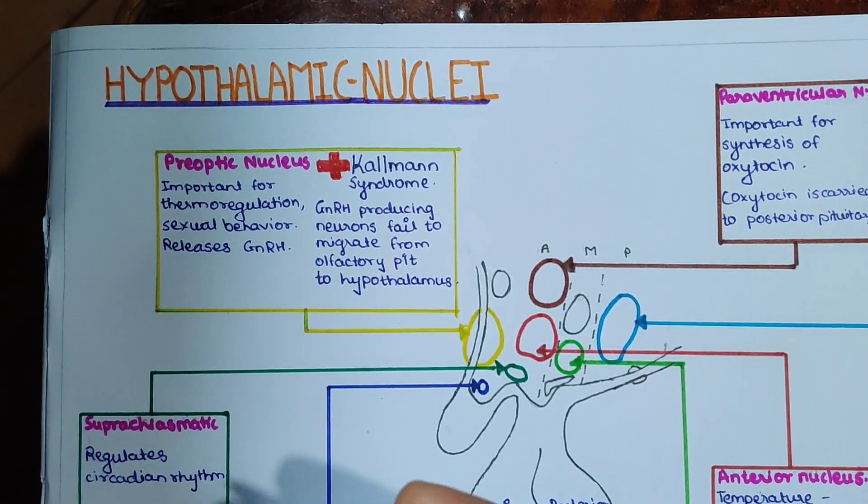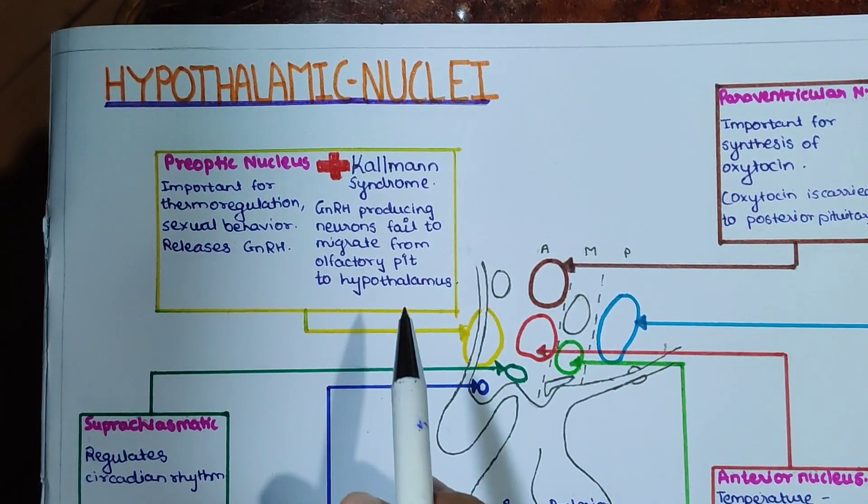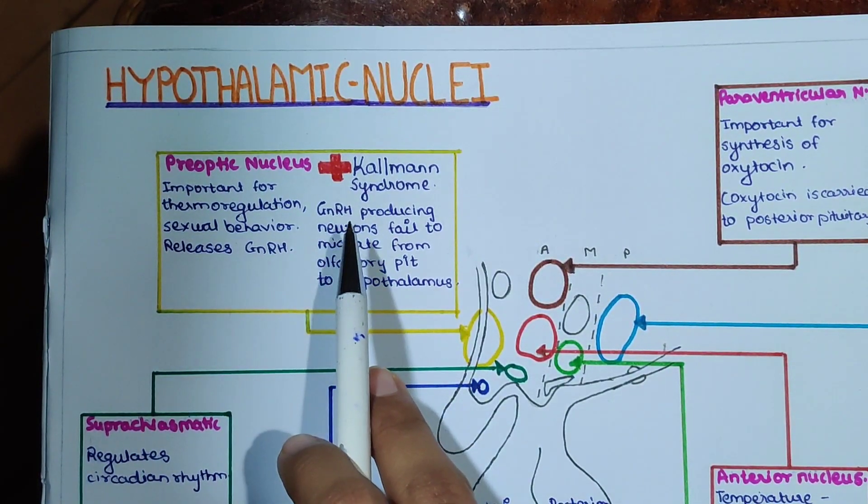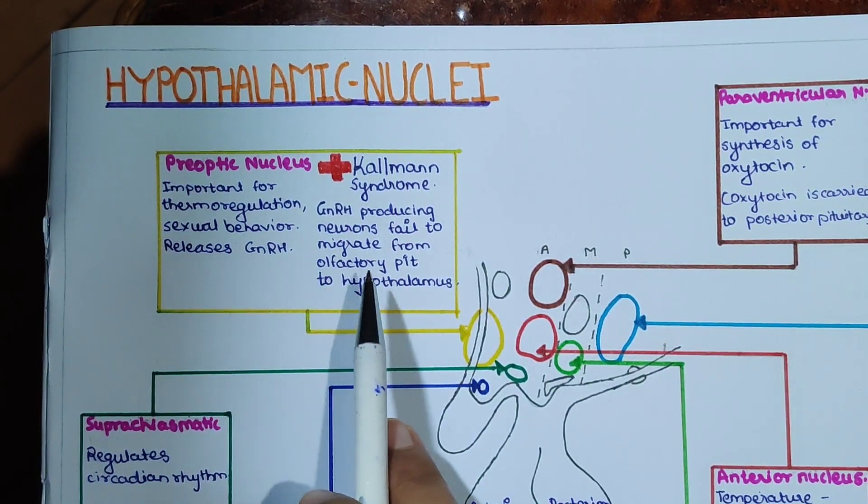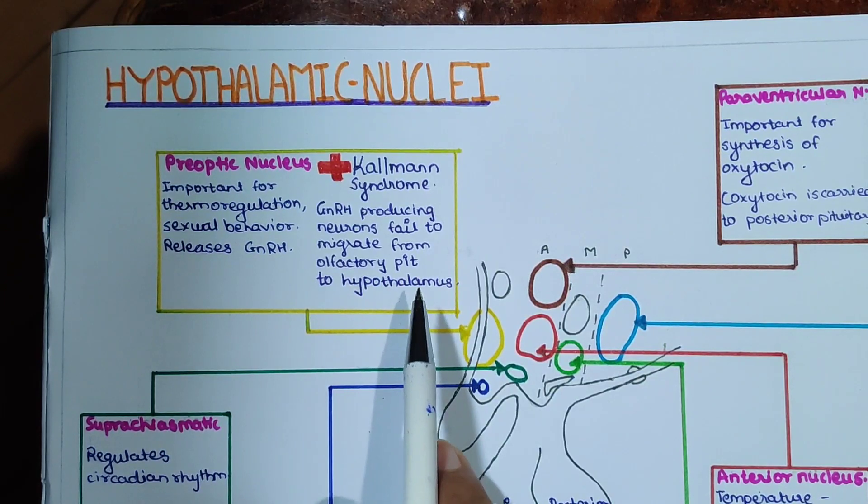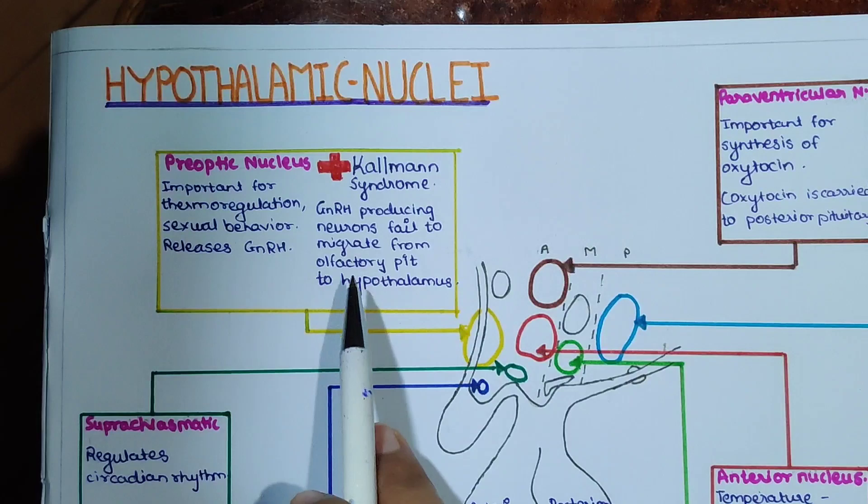The neurons responsible for production of GnRH first arise in the olfactory pit and during development migrate to the hypothalamus. If there is a failure of these neurons to migrate from olfactory pit to hypothalamus, it will cause Kallman syndrome.